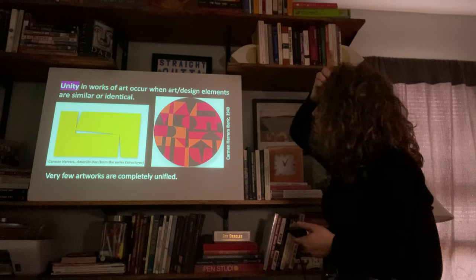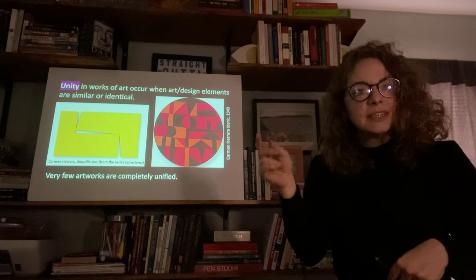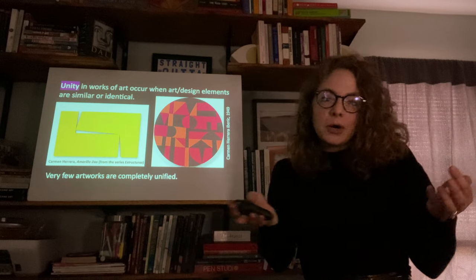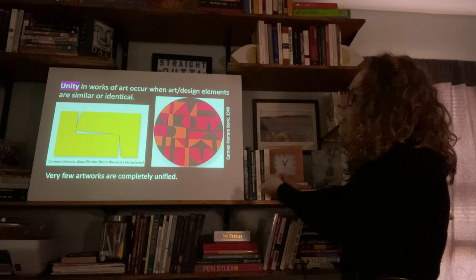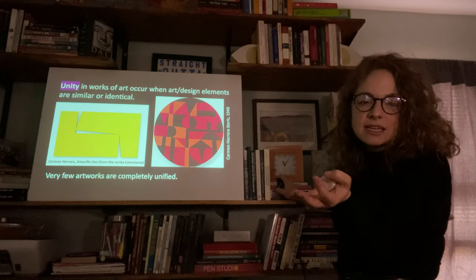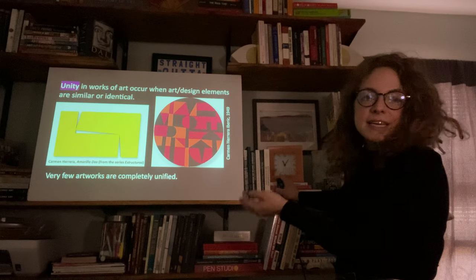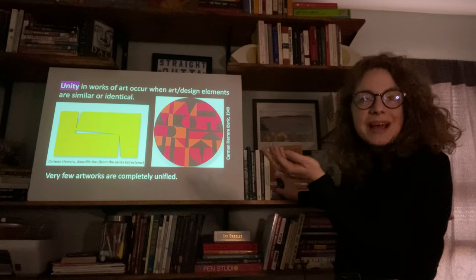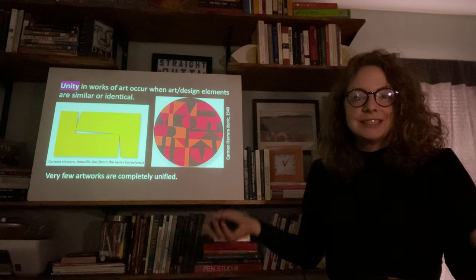First we have unity. Unity occurs in a work of art when the art design elements are similar or identical. Very few artworks have full unity because there's always variety. Carmen Herrera is a Cuban American artist who is 105 years old — there is a Netflix documentary about her. She does fairly unified works; they're not fully symmetrical, but they balance each other out. They have the same visual elements and a lot of repeated patterns, so her artwork demonstrates a lot of unity.